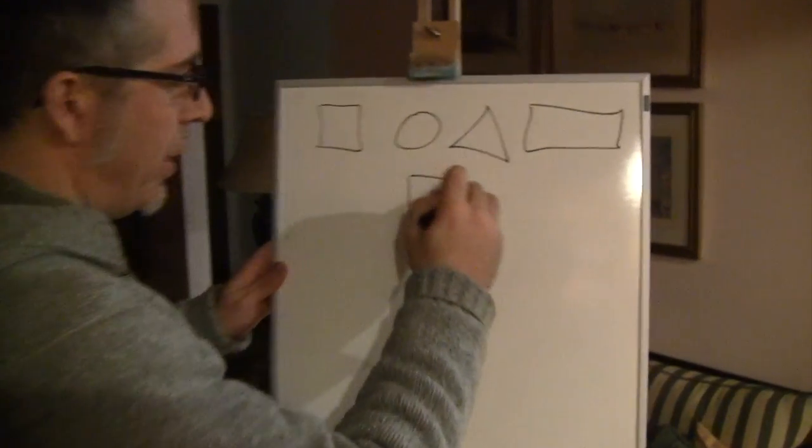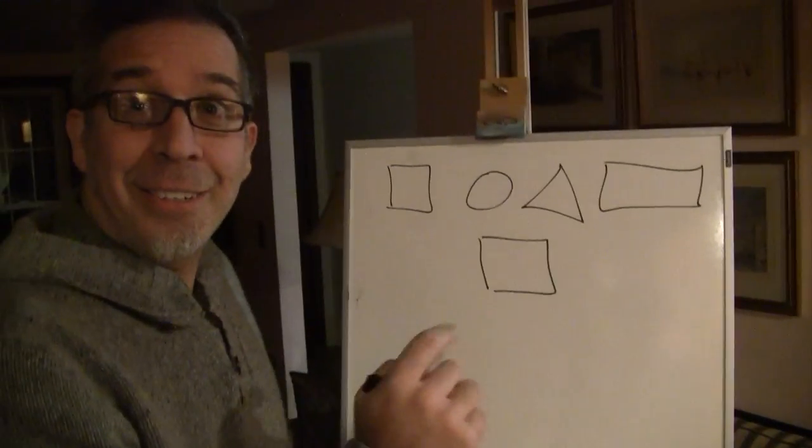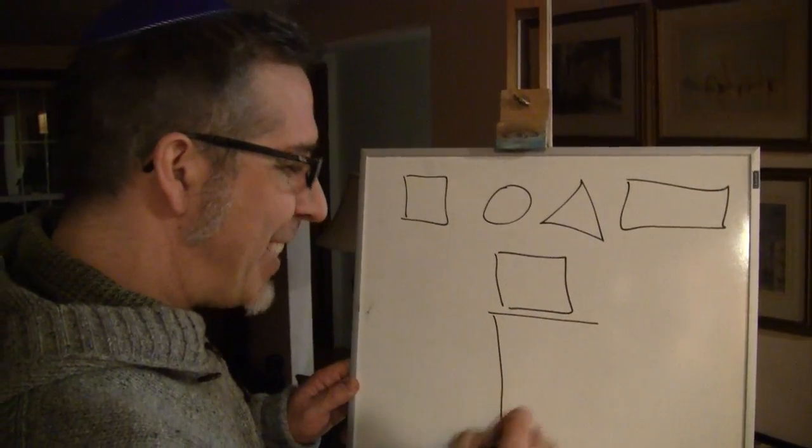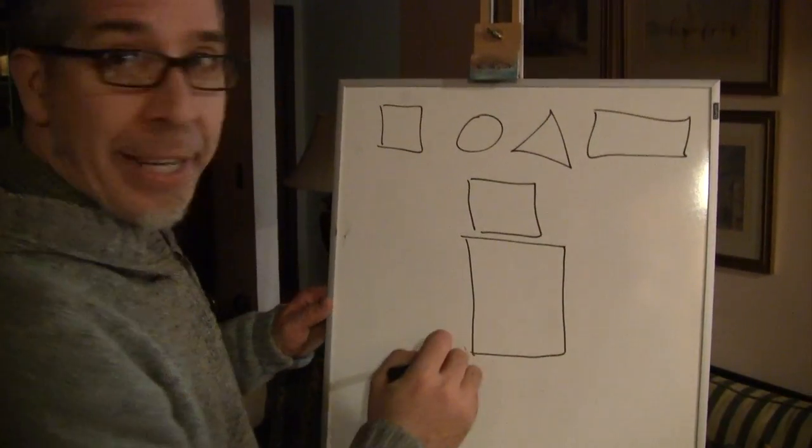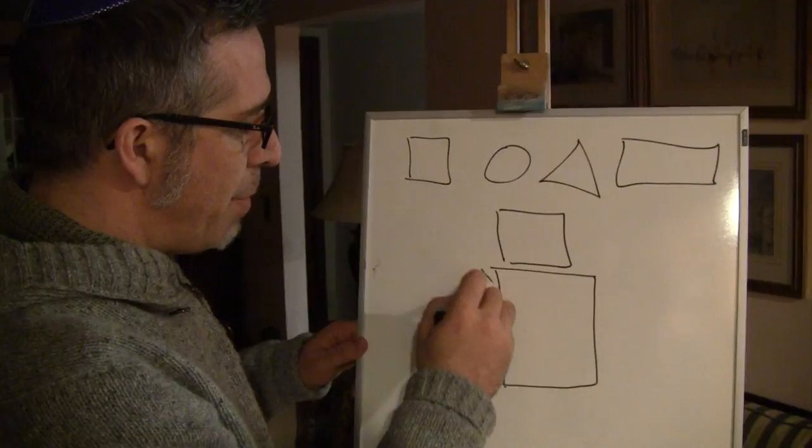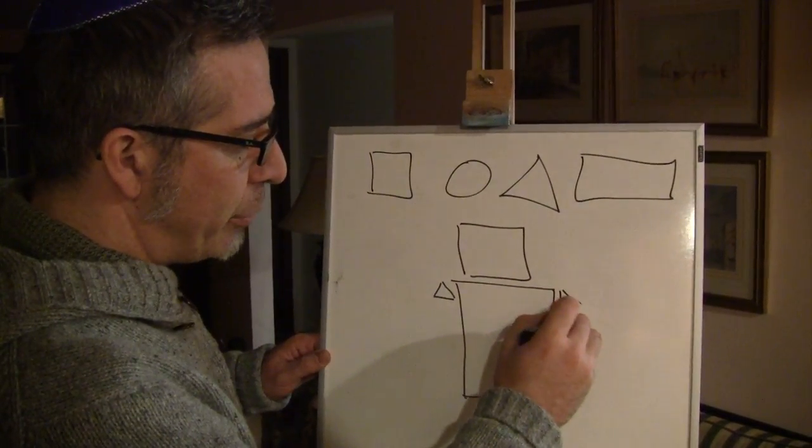Start with a square. This is the robot's noggin. Another square—actually, let's go with a rectangle. Forms its body. Robots need shoulders, so just draw a couple triangles.